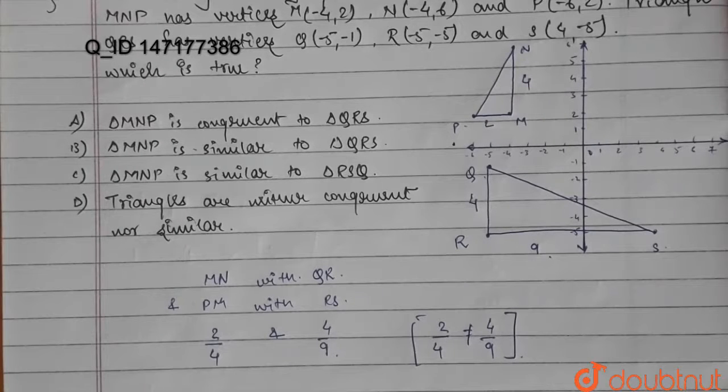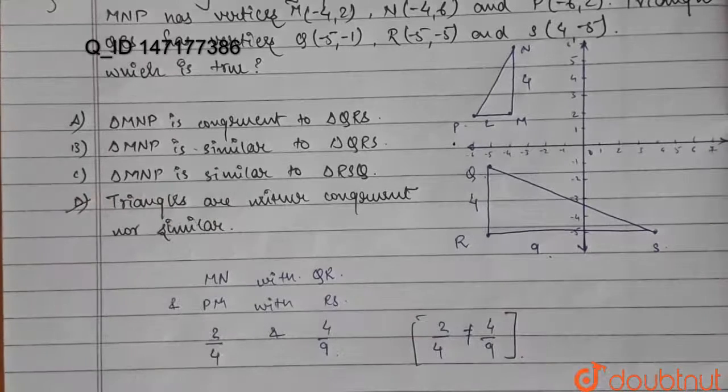The answer is both the triangles are not congruent and as well as they are not similar because the ratio of their sides are not equal to each other. So we get our option D as the right answer.